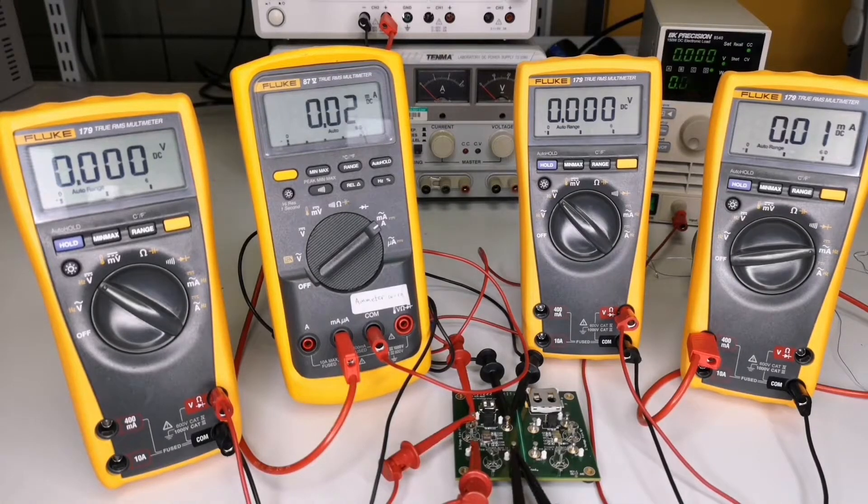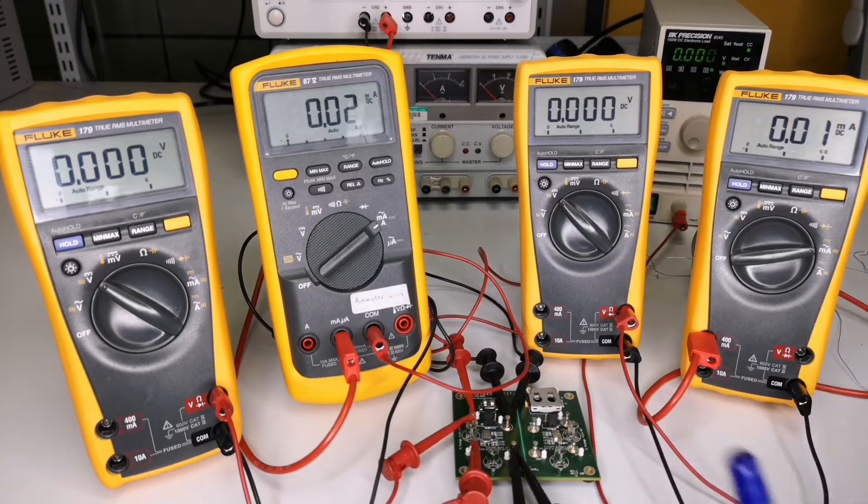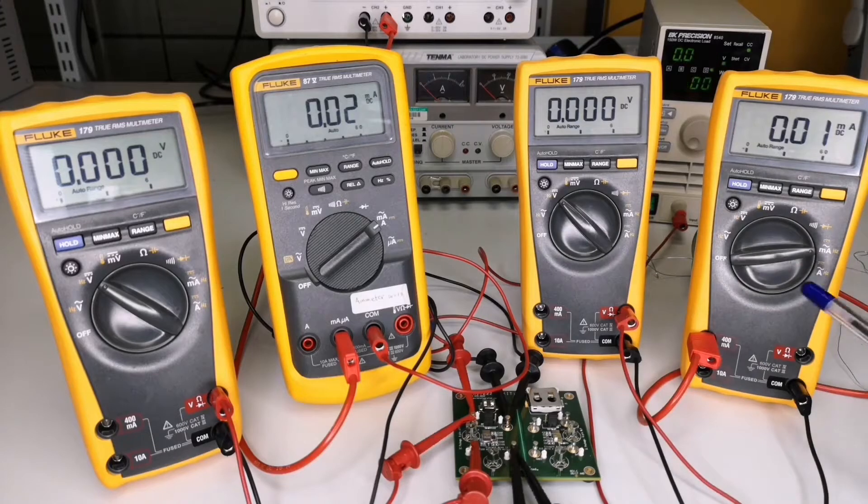Now, I'll demonstrate the MAX17222 EVKit to you. Here, you can see I have connected the multimeter at the input to measure the input voltage and the input current, and at the output to measure the output voltage and the output current.